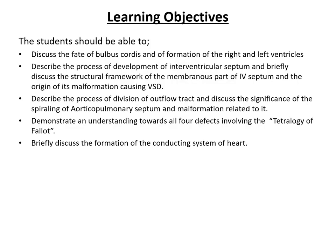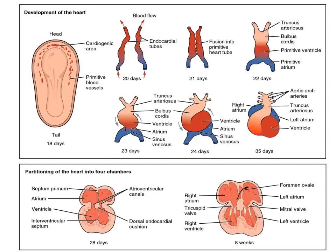These are the learning objectives you are supposed to fulfill by the end of this topic. The overview shows the cardiogenic area making the primary heart field, located at the cranial end of the embryonic disc. These are the two primitive endocardial tubes — very flimsy thin-walled tubes formed by endothelial cells. They are surrounded by the splanchnic mesoderm, the mesoderm making structures of the pharyngeal arches, which helps in the formation of cardiomyocytes and the other two layers of the heart.